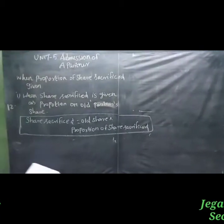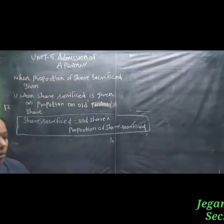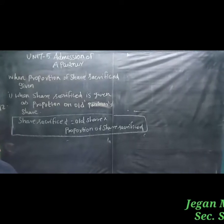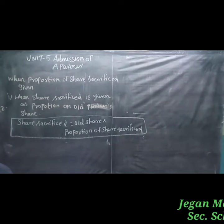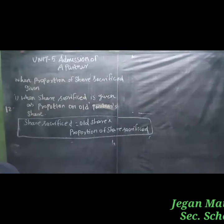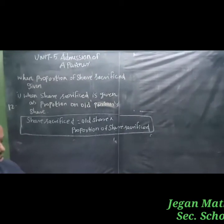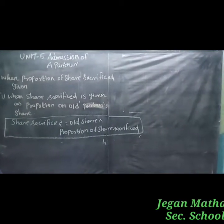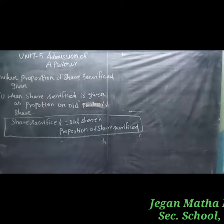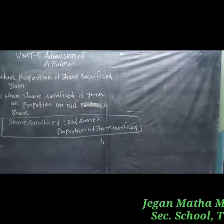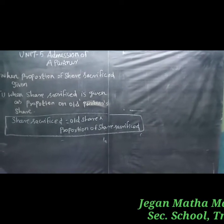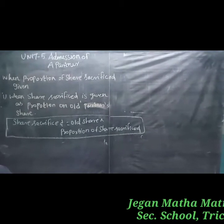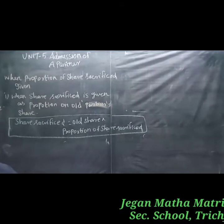Next, sum number 12: Govindam and Gopal are partners in a firm sharing profit and losses in the ratio of 5 to 4. They admit Rahim as a partner. Govindar surrenders 2/9 of his share in favor of Rahim, and Gopal surrenders 1/9 of his share in favor of Rahim. Calculate the new profit ratio and the sacrificing ratio.